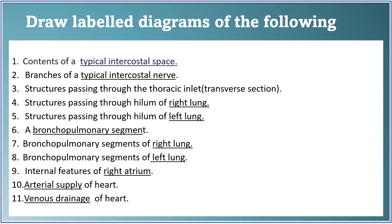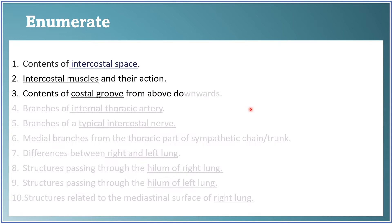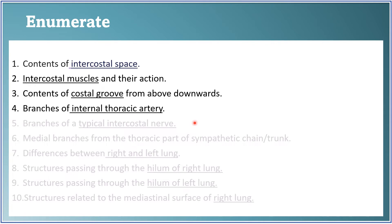Now, enumeration questions. Contents of intercostal space — as already discussed. Intercostal muscles and their actions — write the three intercostal muscles and their actions. Contents of costal groove from above downwards — the posterior intercostal vein, artery, and intercostal nerve (VAN). Branches of internal thoracic artery. Branches of a typical intercostal nerve.